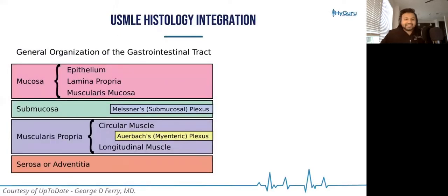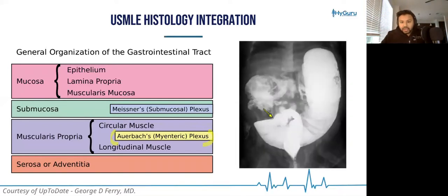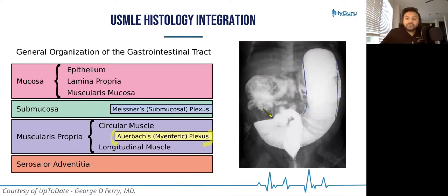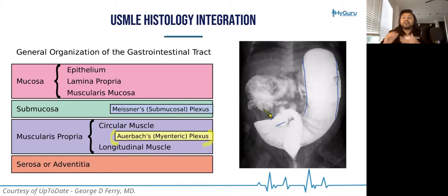Let's do a quick histology integration — understanding where the myenteric plexus is. The Auerbach's myenteric plexus is located in between the inner circular and outer longitudinal muscle. When you have no myenteric plexus, patients are not going to have good peristalsis of stool throughout the GI tract. What happens is you end up having dilation of the colon because there is backup, and at the transition point, there is no myenteric plexus.